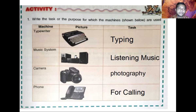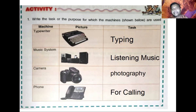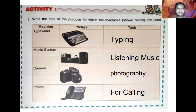Machine number one is the typewriter. This picture is a typewriter. The task of the typewriter is typing — typewriter work is typing. Next, machine number two is your music system, which means your sound box or speakers. The task of the music system is to listen to music.